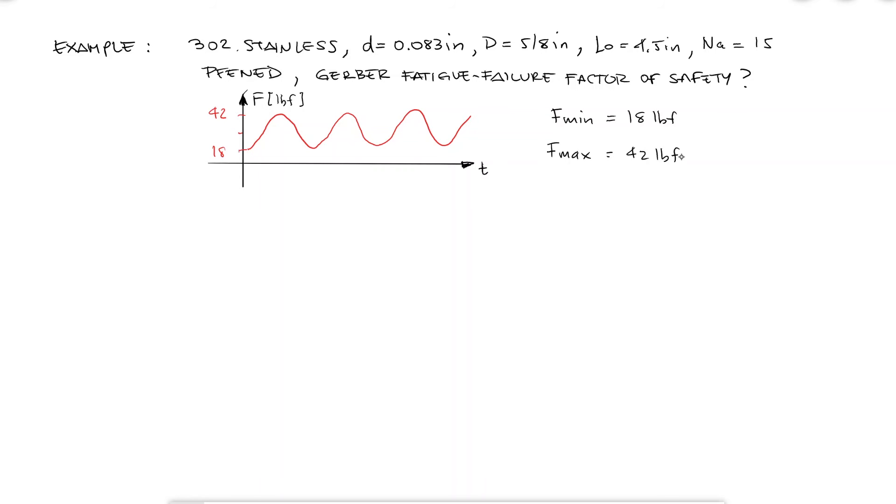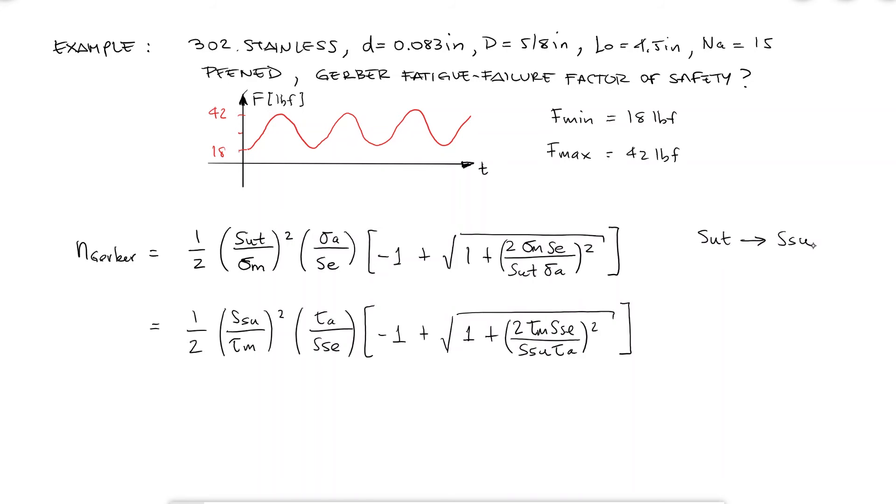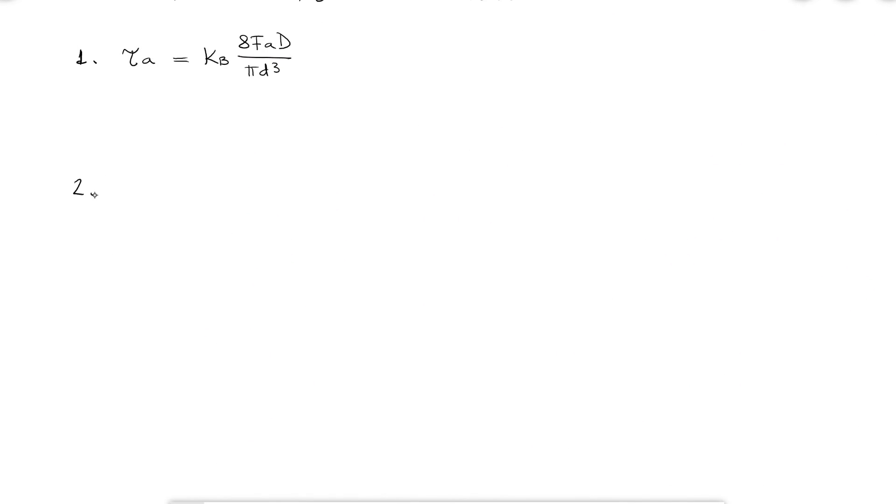To calculate this fatigue failure factor of safety, specific for the Gerber criterion, I can look up the equation for the factor of safety and modify it in terms of the torsional or shearing properties, by replacing each one of the variables. This shows me that I need to find the alternating shearing stress, the mean shearing stress, the torsional modulus of rupture, SSU, and the shearing endurance limit, SSE, and of course I would do that also using the Gerber criterion.